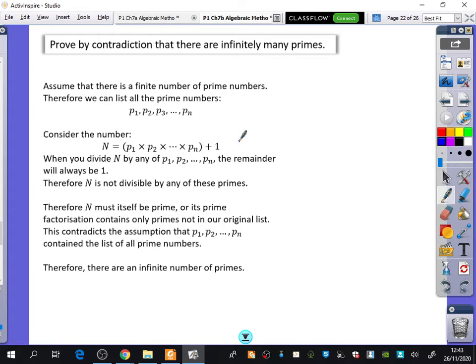When you divide this number by any of the prime numbers, you will always have a remainder of 1. Think about that for a second. If you've got a number made up of prime numbers multiplied together plus 1, when you divide it by any one of those primes, the remainder will always be 1.